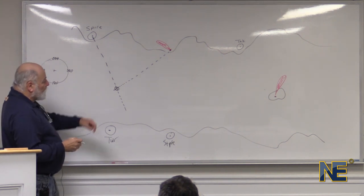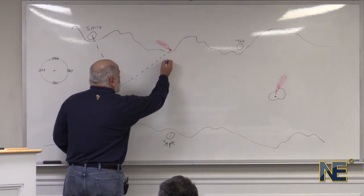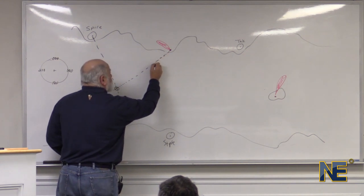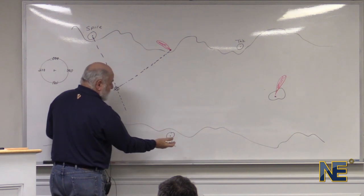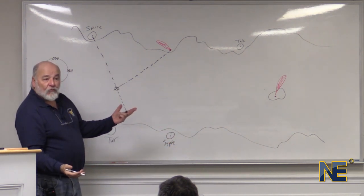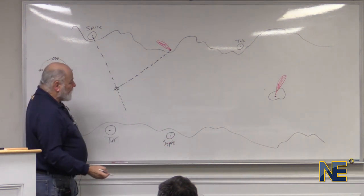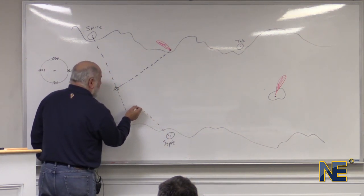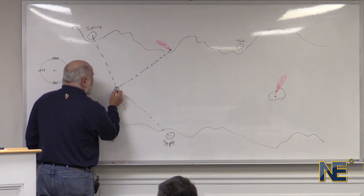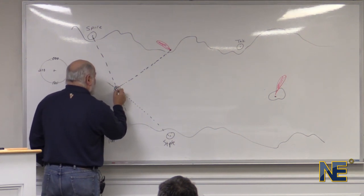Two lines of position. We can do them on opposite pieces of land. We have this 45 degrees off this light. We can look down here and see the steeple. The steeple bears 145 degrees, 150 degrees, whatever it is. We draw a line off that steeple and where that line crosses is where we are.